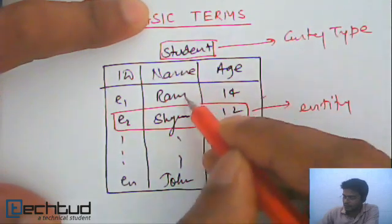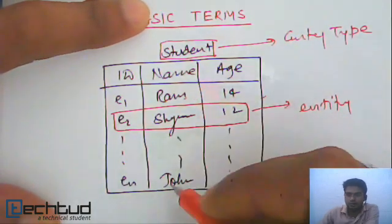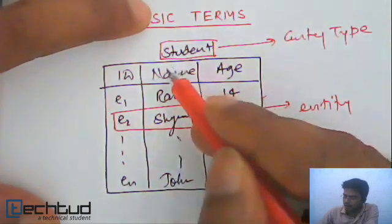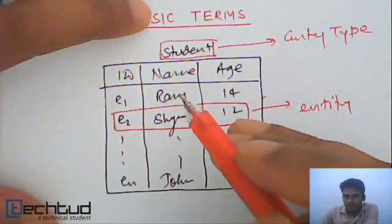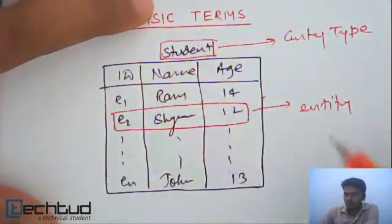If you consider Ram, Shyam, etc., all of them are sharing common attributes. That's why they are the entity of same entity type, that is student.